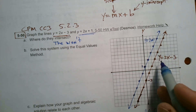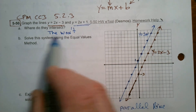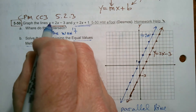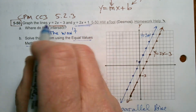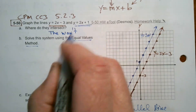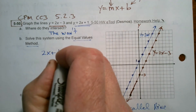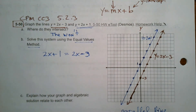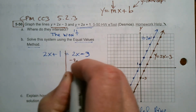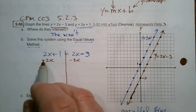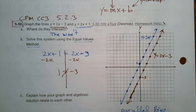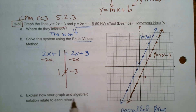It says to solve the system using the equal values method. Graphically we can tell there's going to be no solution — let's confirm that algebraically. Equal values method: I'm looking for where these y's are the same. y equals 2x minus 3 and y equals 2x plus 1, so I set those expressions equal: 2x plus 1 equals 2x minus 3. I subtract 2x from both sides — the x's cancel — and I'm left with 1 equals negative 3, which is not true.